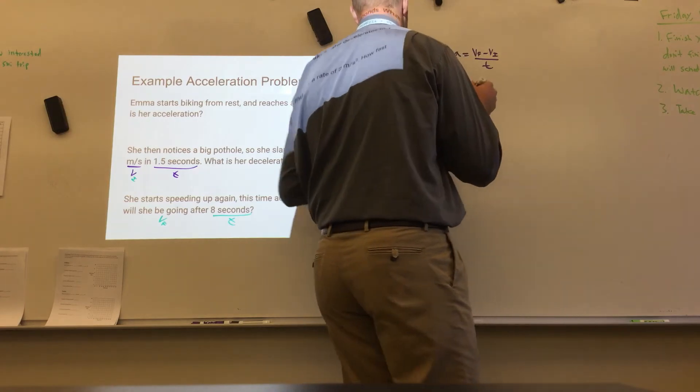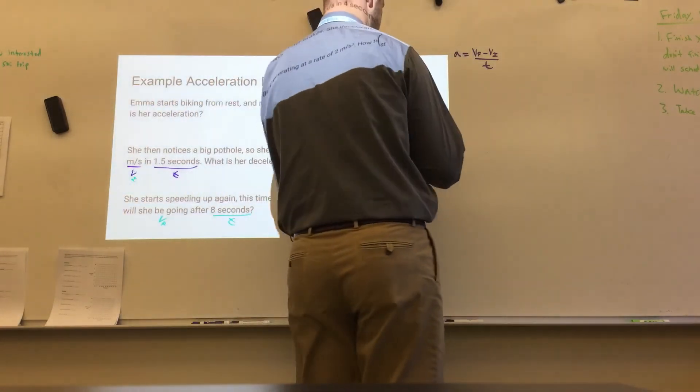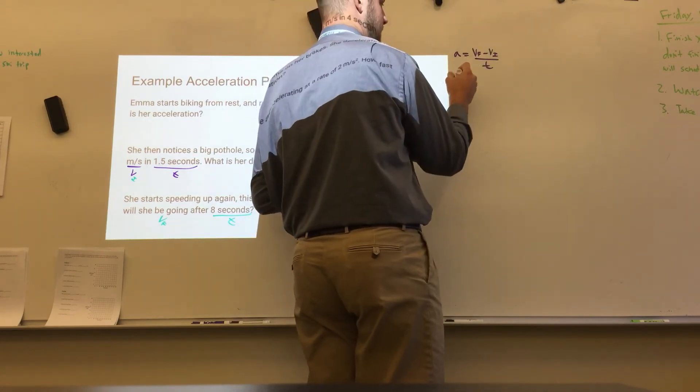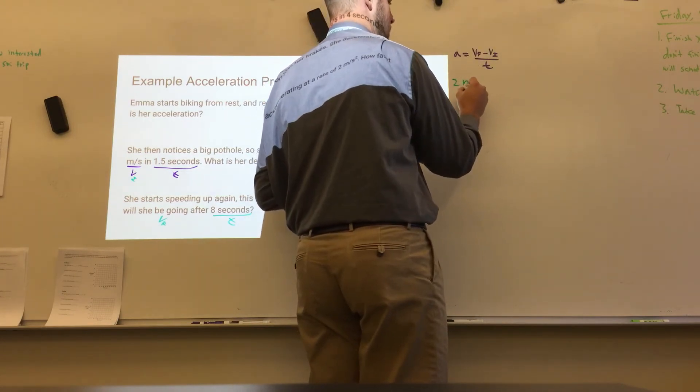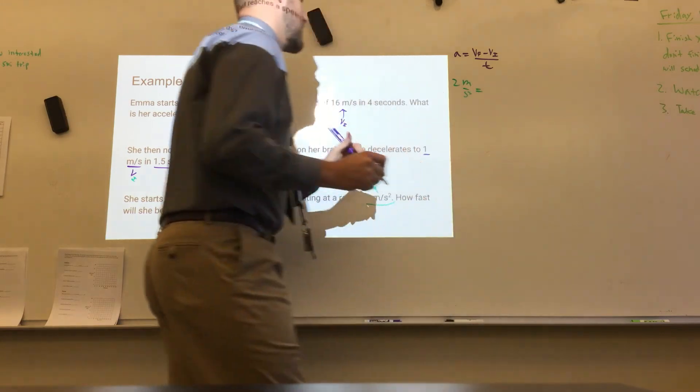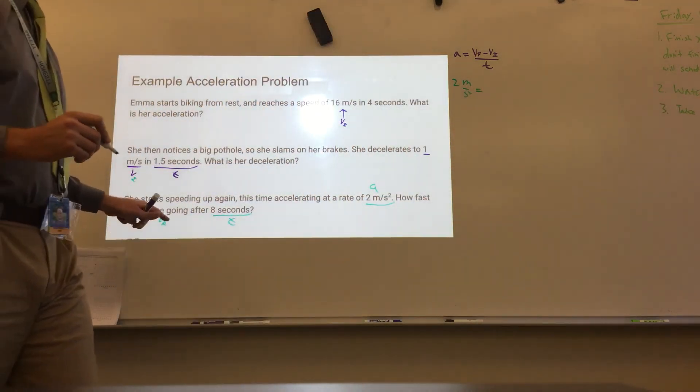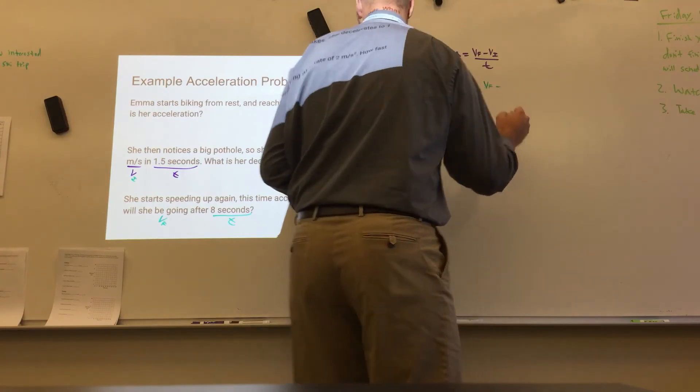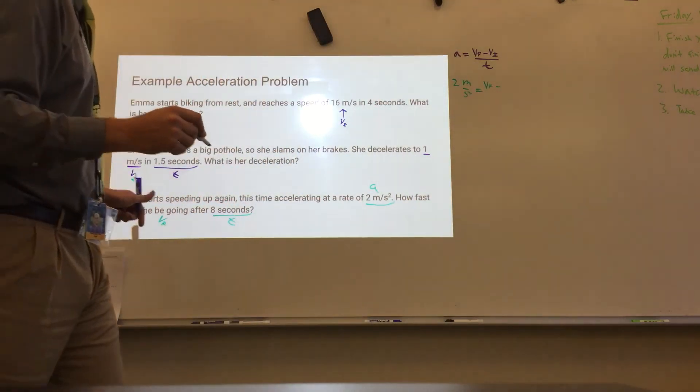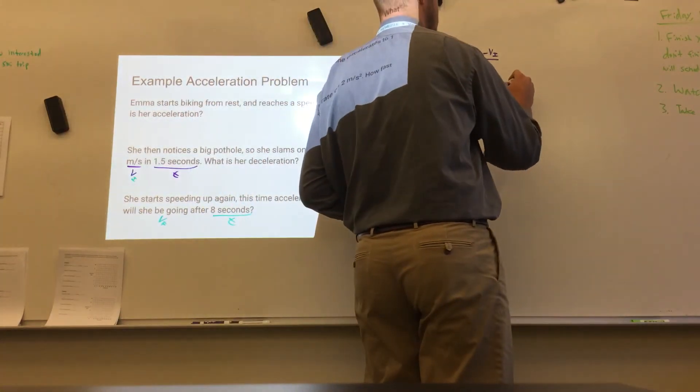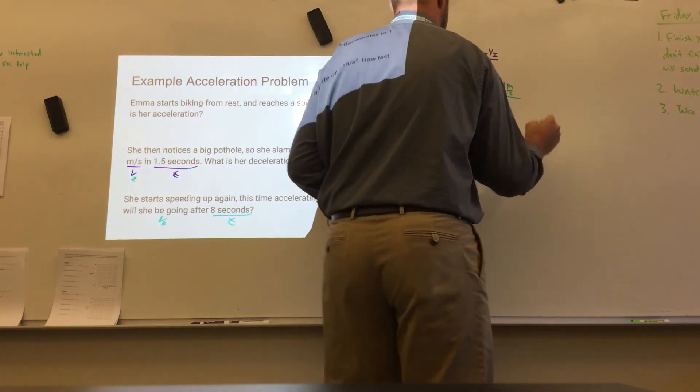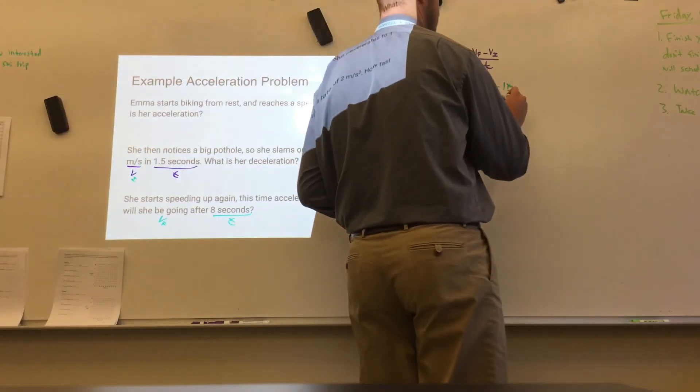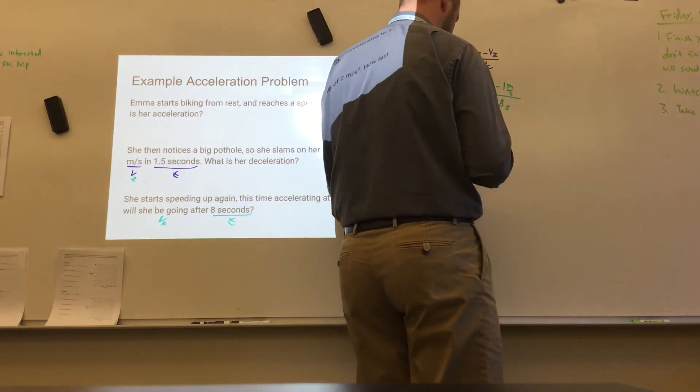The A that she has is 2 meters per second squared. So notice that I'm not drawing the arrows anymore about how each goes in here. Hopefully that's something that you don't have to do every time. You can if you want, but I'm just going to go ahead and plug everything in here. VF is what we want to know, minus the initial was 1 meter per second, 1 meter per second, divided by a time of 8 seconds.